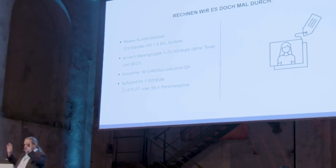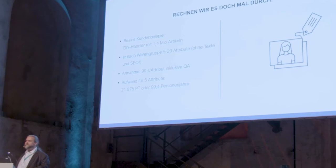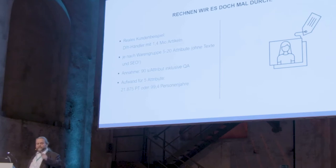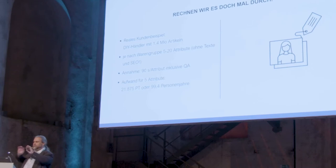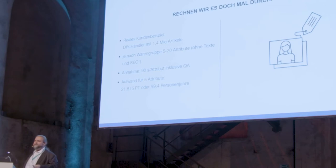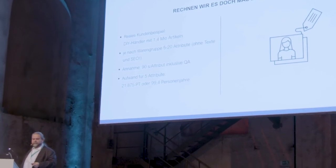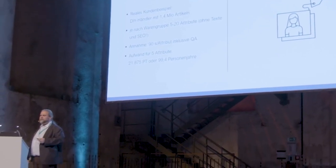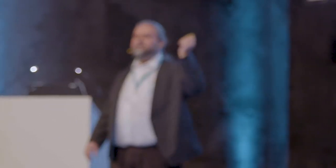It's usually listed articles — also a very painful issue. They have 1.4 million articles, and if they want to index or reference these, they select 20 attributes — no SEO, just product information without any text. One attribute requires 90 seconds. With 5 attributes, this is 99 years of man-days. You can't do this as a sideline.